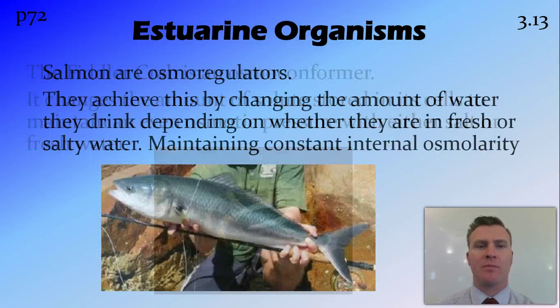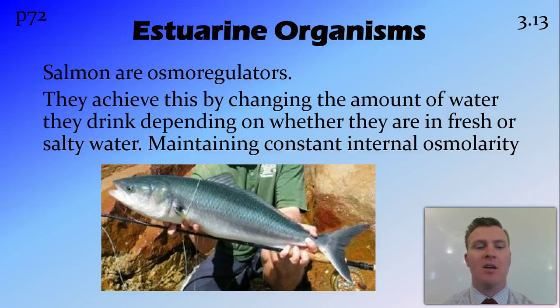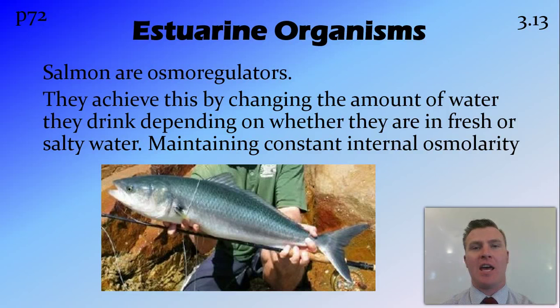On the other hand, salmon are osmoregulators — they undergo homeostasis. When they're out in the ocean, they have lots of water going out of them, so they drink lots of water like a saltwater fish. And when they're in rivers, they have lots of water coming into them, so they don't drink very much and they urinate a lot. This maintains constant internal pressure despite that changing external environment.